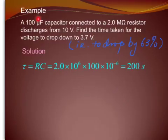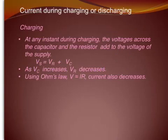We have this example here for illustration. A 100 microfarad capacitor is connected to a 2 megaohm resistor. It discharges from 10 volts down to 3.7 volts. In other words, it dropped by 63%. And you have to find the time constant. Very simple, you just use the formula to work out the time constant. And it's 200 seconds.